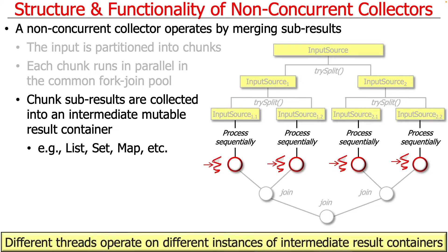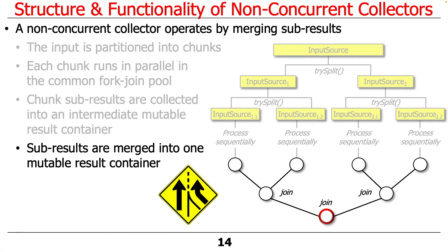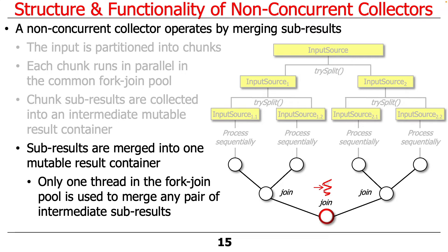For non-concurrent collectors, different threads in the common fork-join pool operate on different instances of intermediate result containers, which get merged back together to produce the final reduced result in a final mutable result container. There could be multiple mutable result containers intermediately along the way as that reduction process takes place. Only one thread is ever used to merge things together, so you never have to worry about synchronization.